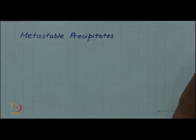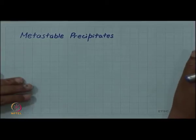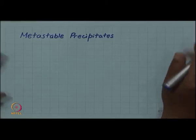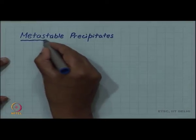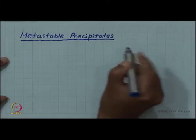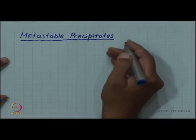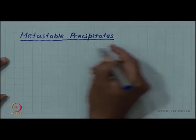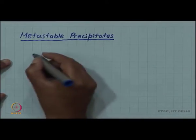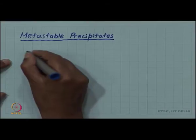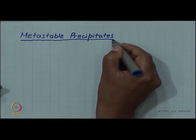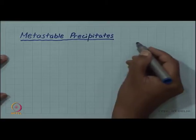One thing which you have to keep in mind, and which I have not been telling correctly in those past slides, is that I was using equilibrium precipitate as an example for hardening. But in reality, particularly in aluminium-copper alloy, it is not the equilibrium precipitate but some metastable precipitate which really causes the hardening.